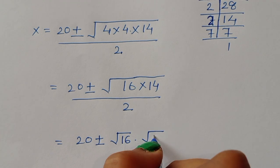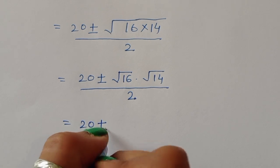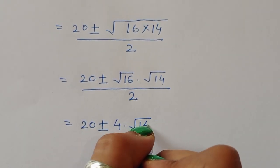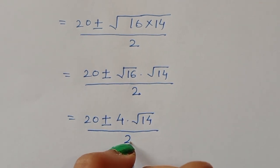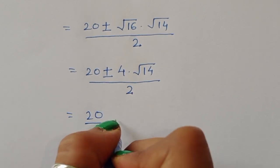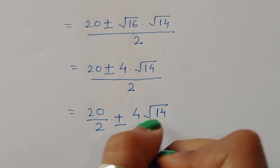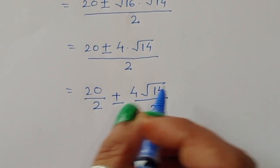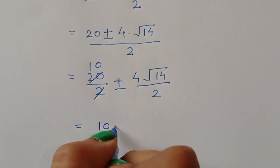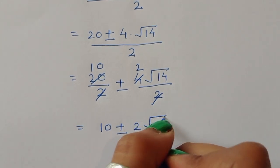So x equals 20 plus or minus square root of 16 times square root of 14, all divided by 2. Since square root of 16 equals 4, this becomes 20 plus or minus 4 times square root of 14, divided by 2. Separating the terms: 20 divided by 2, plus or minus 4 square root of 14 divided by 2, which gives 10 plus or minus 2 square root of 14.